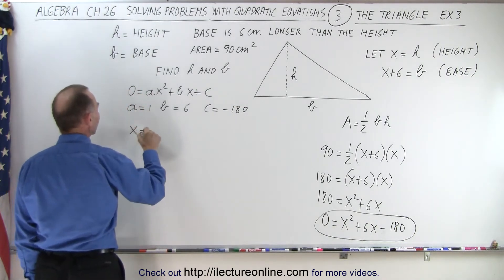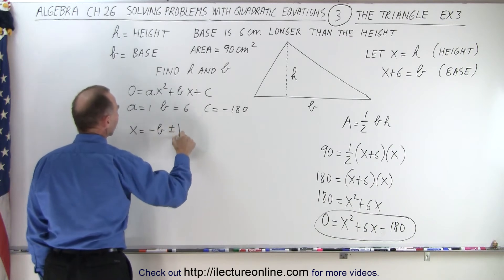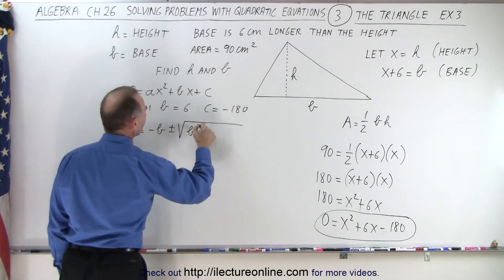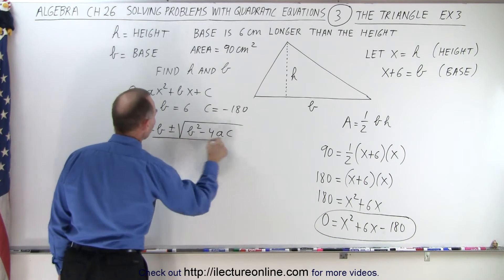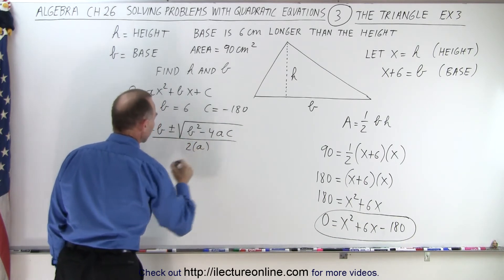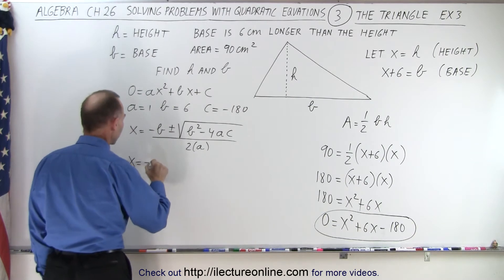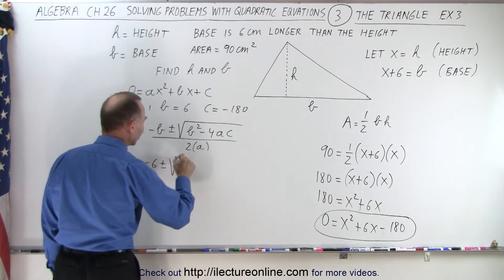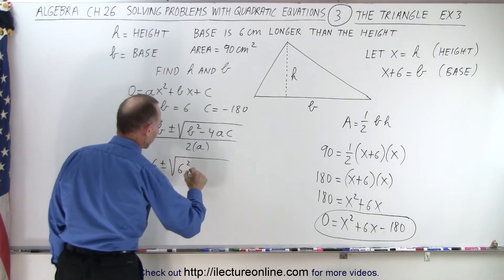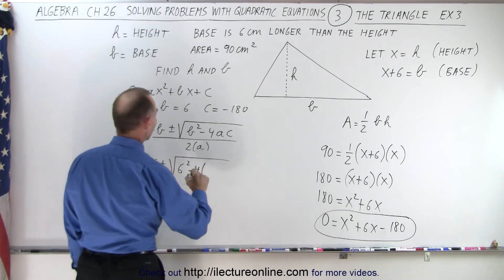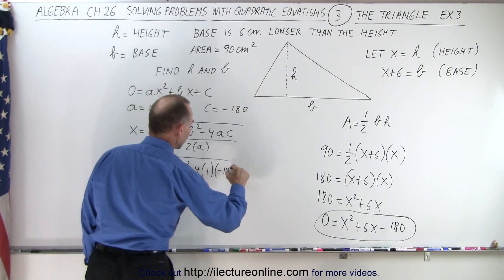x is equal to minus b plus or minus the square root of b squared minus 4ac, all divided by 2 times a. That means x is equal to minus 6 plus or minus the square root of 6 squared minus 4 times a, which is 1, times c, which is minus 180, and the whole thing divided by 2 times 1.